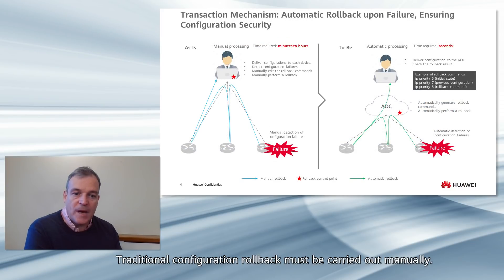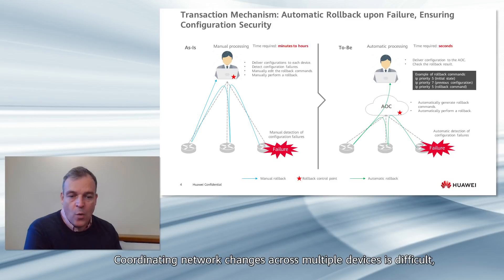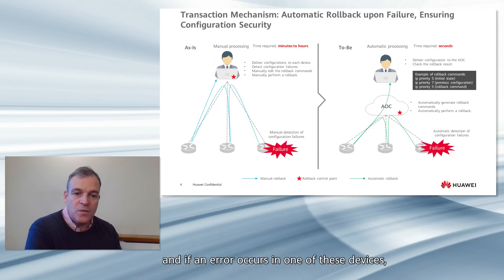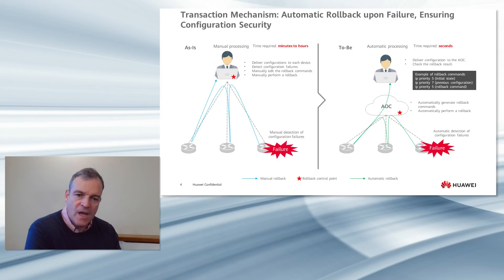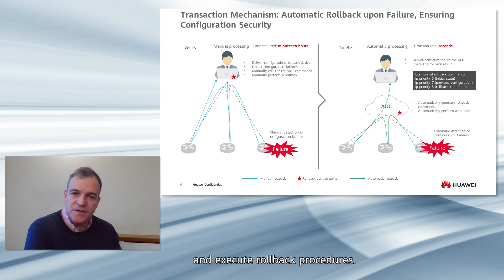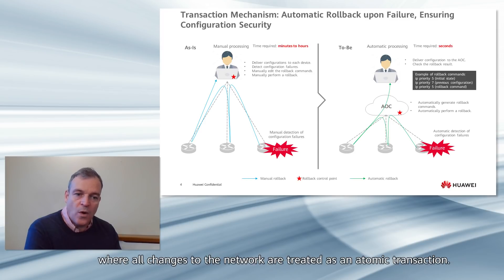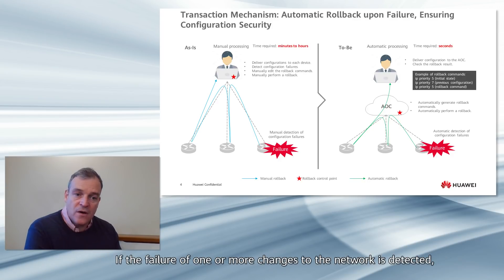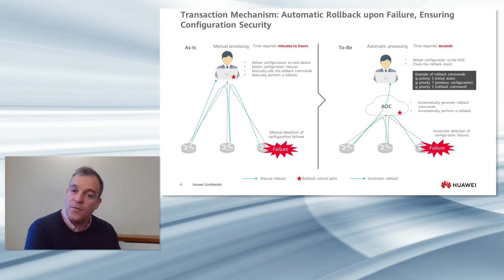Traditional configuration rollback must be carried out manually. Coordinating network changes across multiple devices is difficult, and if an error occurs in one of these devices, each of the previous changes must be rolled back to the previous working state. The operator needs to understand which devices failed, calculate the remediation commands on the affected devices, and execute the rollback procedure. AOC brings a network-level transaction mechanism where all changes to the network are treated as an atomic transaction. If a failure is detected, the entire network changes automatically roll back to the previous network state.